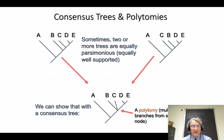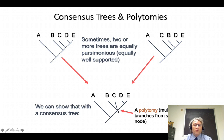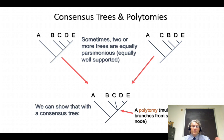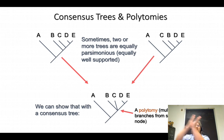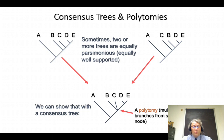A polytomy doesn't necessarily mean the ancestor had three simultaneous branches — though that's theoretically possible — it means we are currently unresolved as to the branching order, but B and C are almost certainly in that part of the tree. The vast majority of real analyses produce consensus trees with at least some polytomies. If there are dozens of equally parsimonious trees or even two hundred thousand, that might collapse into a series of polytomies, but there can still be a lot of resolved structure in the tree — it's just unresolved in those particular places.